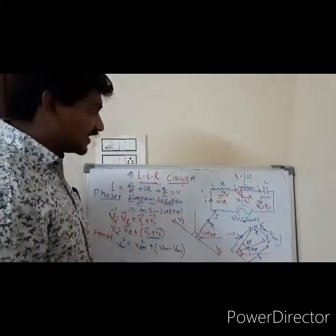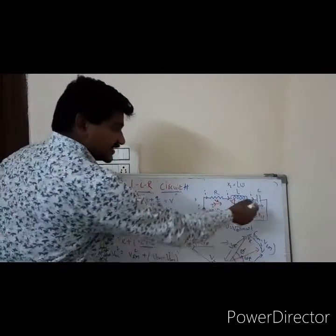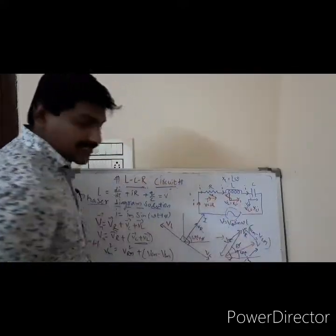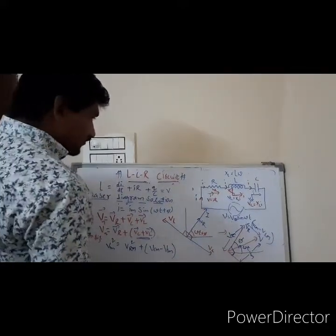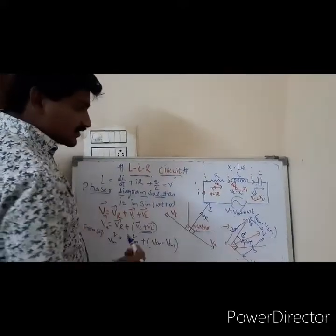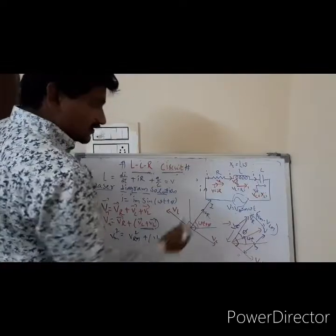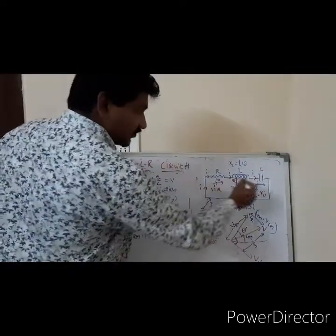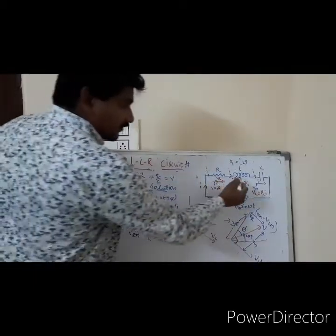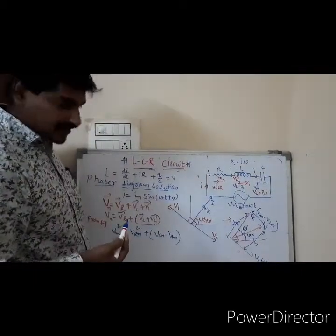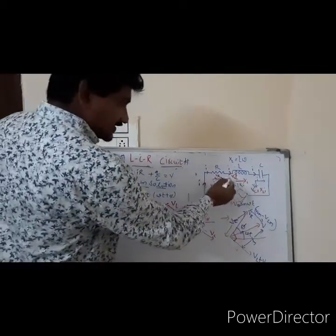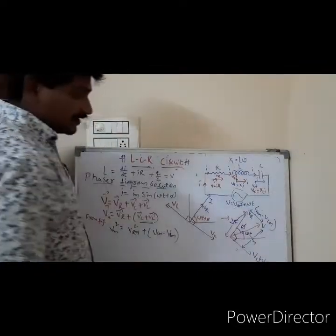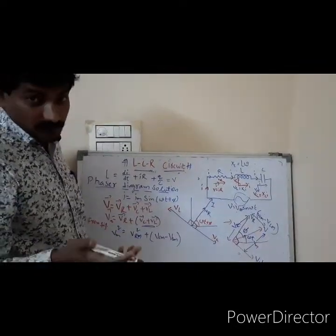Now we will see when we are connecting resistance, inductor, and capacitor in series with application of AC voltage. When you have applied AC voltage to the LCR circuit, since they are connected in series, the current flowing through the three components is constant. Current is the same, same direction. But there is a chance voltage may vary.